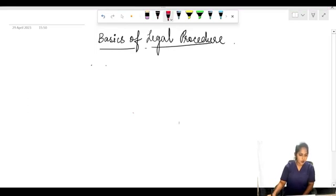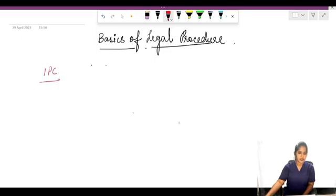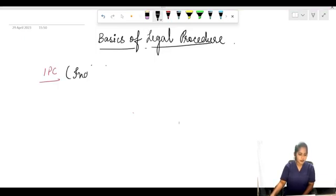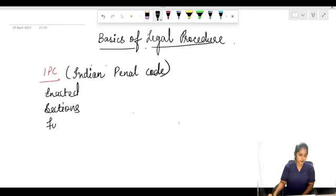The first code which we have to know is IPC, the full form is Indian Penal Code. Under this, three things we have to know: when it was enacted, the number of sections under it, and what is the function. It was enacted in the year 1860.